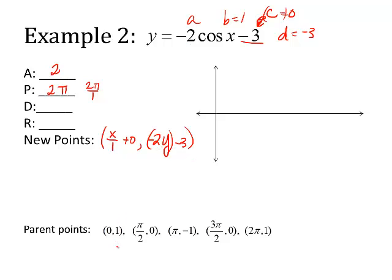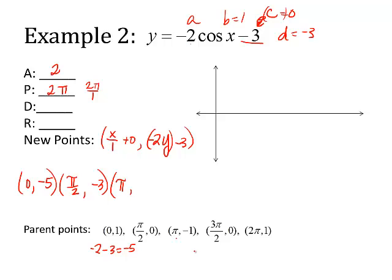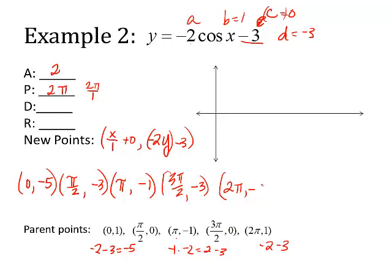Applying to parent cosine points: (0, 1) → x stays 0, y: 1×(−2) − 3 = −5. (π/2, 0) → x stays π/2, y: 0×(−2) − 3 = −3. (π, −1) → x stays π, y: (−1)×(−2) − 3 = 2 − 3 = −1. (3π/2, 0) → x stays 3π/2, y: 0×(−2) − 3 = −3. (2π, 1) → x stays 2π, y: 1×(−2) − 3 = −5.